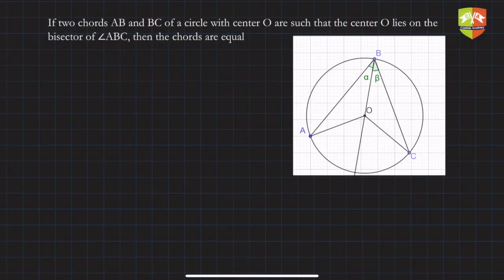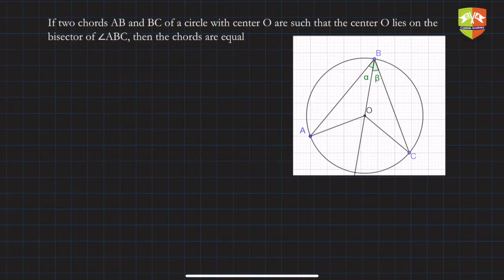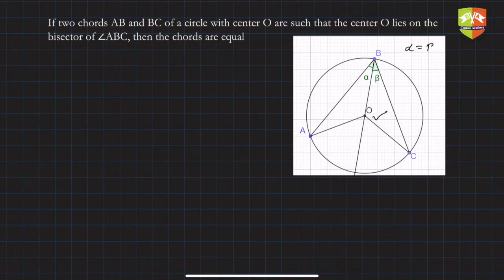This theorem is the converse of the previous theorem. It states: if two chords AB and BC of a circle with center O are such that the center O lies on the bisector of angle ABC, then angle alpha is equal to angle beta — this is given. We have to prove that the chords are equal, i.e., AB is equal to BC.